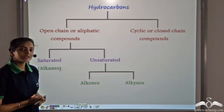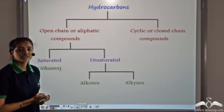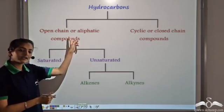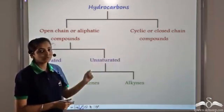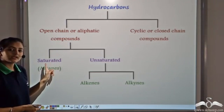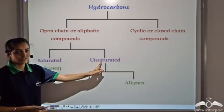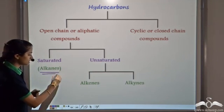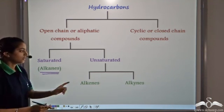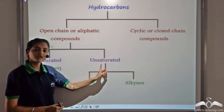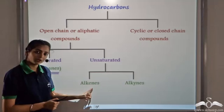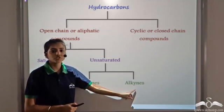Let's revise the hydrocarbons. Hydrocarbons are compounds of hydrogen and carbon. They can be open chain (aliphatic) or cyclic (closed chain). Open chain hydrocarbons can be saturated — alkanes, containing only single covalent bonds — or unsaturated, showing a double bond (alkenes) or a triple bond (alkynes).